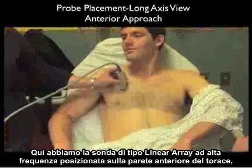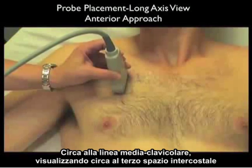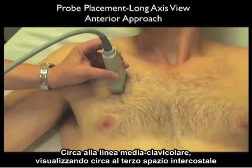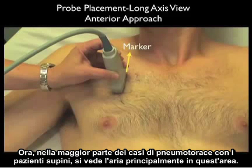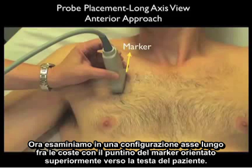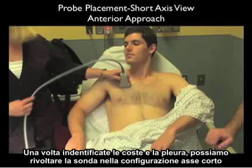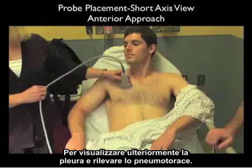Here we have the high-frequency linear type array probe positioned on the anterior chest wall at about the mid-clavicular line, looking into about intercostal space 3. In most cases of pneumothorax with the patient supine, the air would be predominantly seen in this area. We're looking in a long axis configuration between the ribs with the marker dot oriented superiorly towards the patient's head. Once we've identified both the ribs and the pleura, we can swivel the probe into the short axis configuration to further look at the pleura and detect pneumothorax.